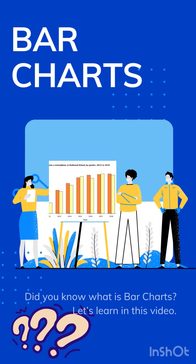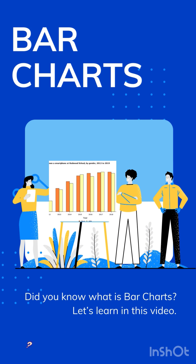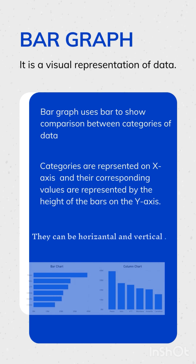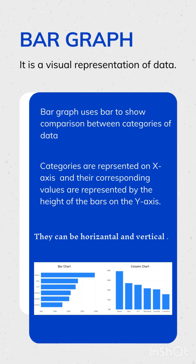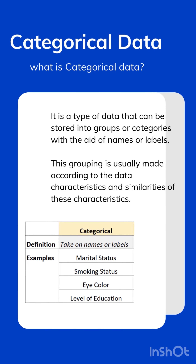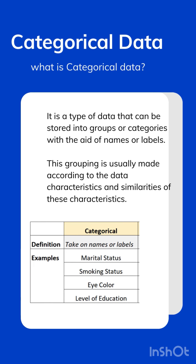Today we'll learn about bar charts. We all have an idea about what bar charts are and how they are represented. Bar charts are used to show the relationship between two sets of data or categories of data. The most used term here is categorical data — that is, data that can be sorted into groups.